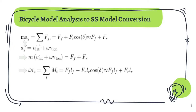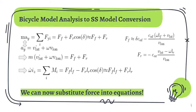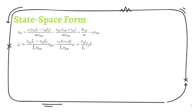Using the angular momentum principle, we can now model the yaw dynamics using this function. Again, we can use the small angle assumption and simplify the math. These equations give us the forces experienced by the front and rear tires. C represents the cornering stiffness, which is a constant and is the negative rate of change of the lateral force to the angle psi. We can now substitute the forces into our original equations and we get these equations which model the bicycle dynamics.